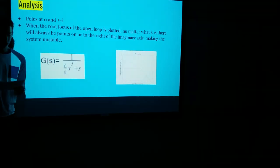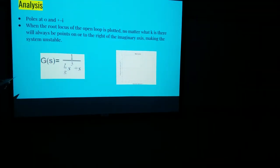So for our analysis, we have poles at zero and plus or minus i, as you can see here in our root locus. According to our calculations, using our MATLAB root locus plot, we will always have points that will lie on or to the right of the imaginary axis due to the poles. Because of this, our system will be unstable.